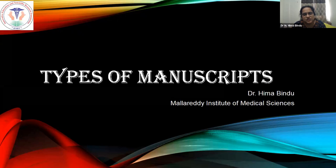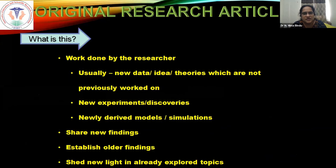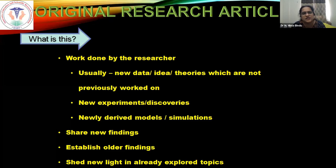There are several types of manuscripts published by journals; we will be dealing with a few of them. The most important one is the original research article. We all want our hard work in research to be read and acknowledged, and the original research article does just that. This article contains a new idea, theory, or data not done previously — it could be an experiment, a discovery, or even a simulation. This is the best way to share a new finding or to establish an older finding. Nowadays, many such original articles are being published on COVID.